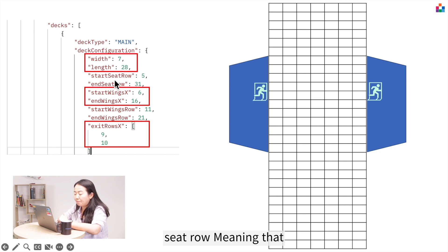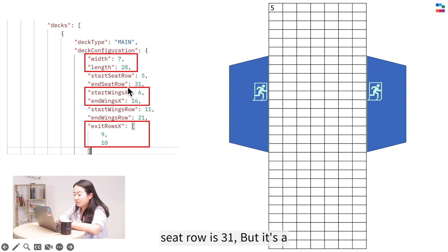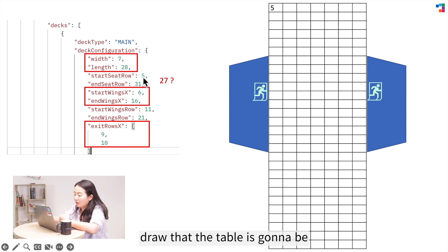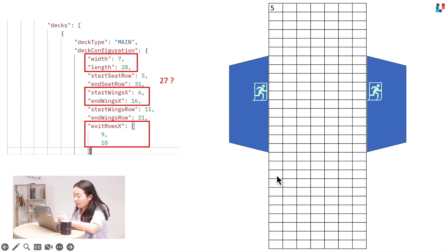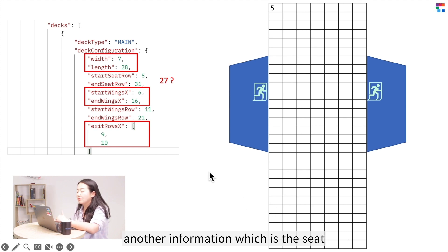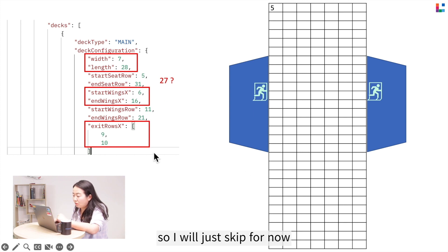Looking at start seat row and end seat row: the seat row starts from 5 and ends at 31. Starting from 5, the last seat row is 31. That seems a bit odd because we drew the table as 28 rows, but calculating from 5 to 31 gives only 27 seats. This means one row will be empty in this table, and we'll figure out where from the seat details information. For now, we'll skip ahead.